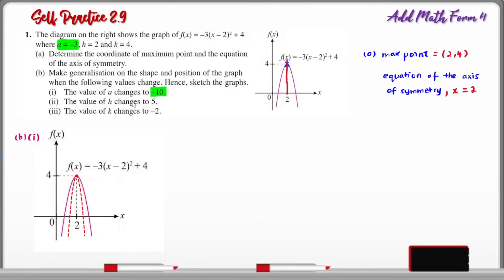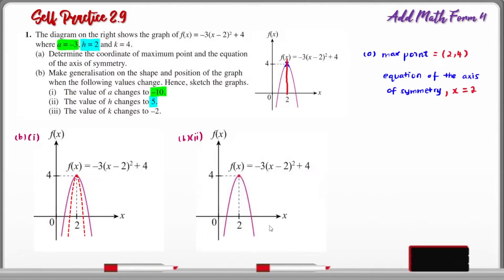B2: The value of h is changed to 5. Originally, h equals 2. The value h is the x-coordinate of the maximum point. When it changes from 2 to 5, the graph with the same shape moves horizontally 3 units to the right. The red dotted parabola shows the graph when h changes from 2 to 5, which moved 3 units to the right. So now the maximum point coordinates will be (5, 4), and the axis of symmetry is x equals 5.